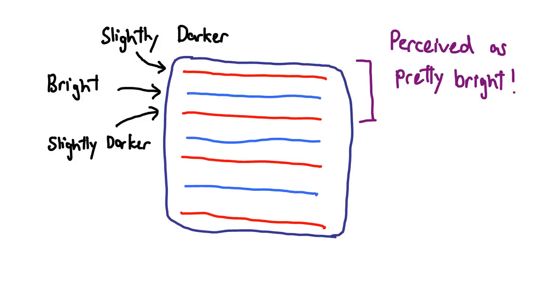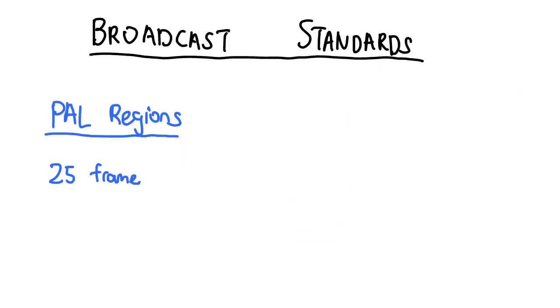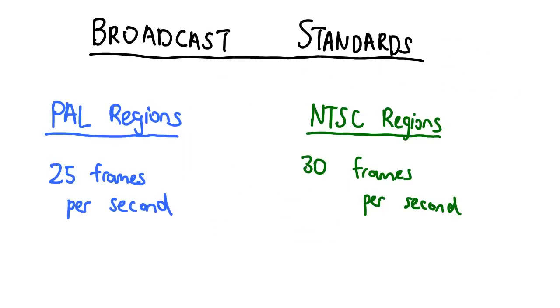Now at the same time, there was another problem. Signal standards determined that 25 or 30 frames, depending on whether you are in a PAL or NTSC region, to be displayed per second.